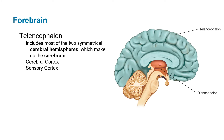Let's start with the forebrain. The forebrain is made up of two components. One is the telencephalon, which includes most of the two symmetrical cerebral hemispheres that make up the cerebrum, as well as the cerebral cortex and the sensory cortex. The other is the diencephalon, located at the bottom, which we'll talk about in a bit.